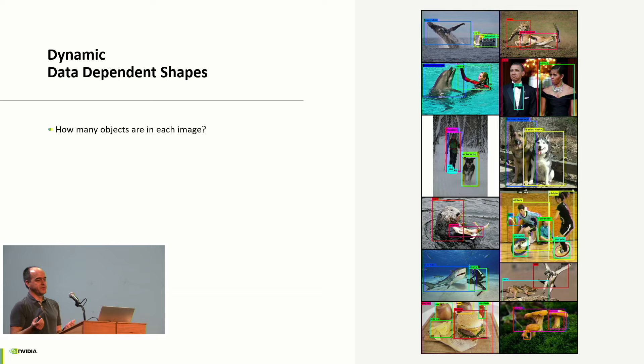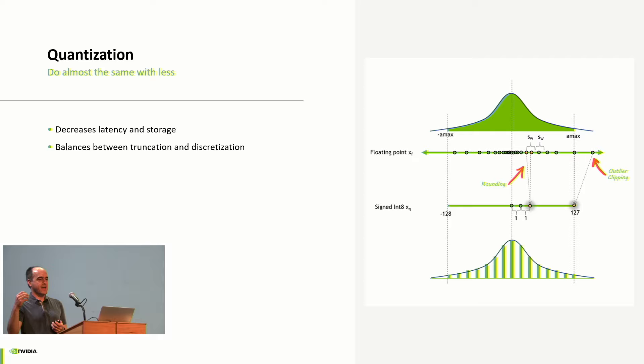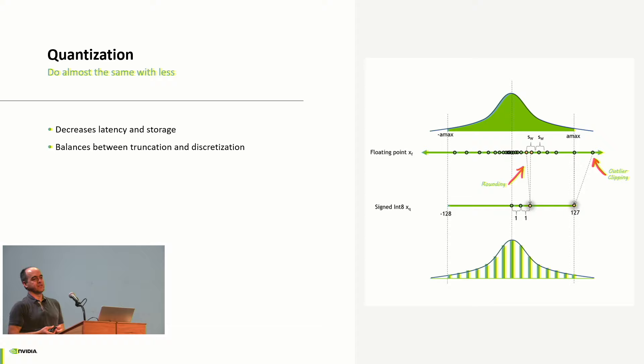Once you've figured out all the shapes and types, you have quantization — I call it doing almost the same with less. You take your input distribution and figure out how to map this floating point input distribution onto a smaller data type, normally an integer. You truncate the outputs and discretize the data, but this does have accuracy loss because multiple floating point values can map to the same integer value.